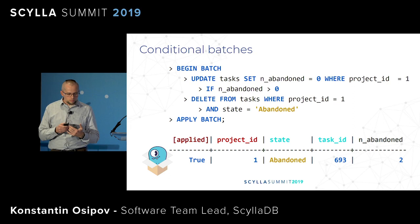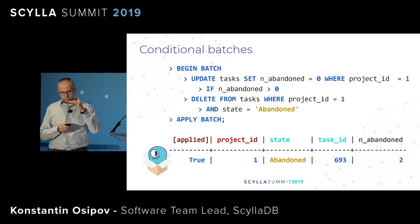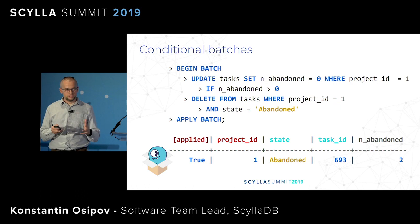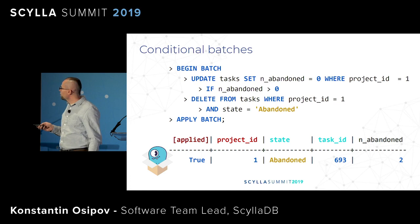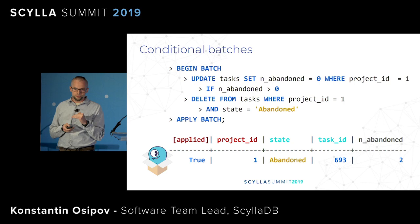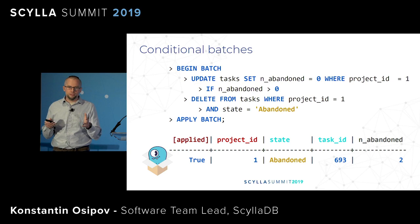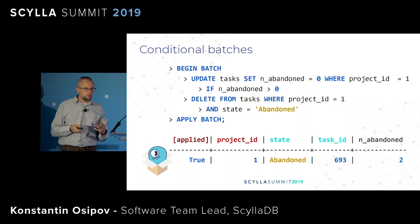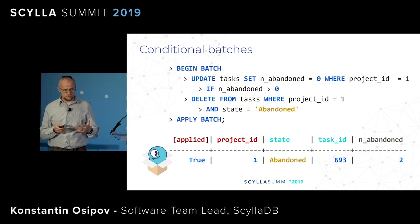Conditional batches are very similar to classical transactions in traditional databases. The only difference is that if you have multiple conditions in the batch there is no else branch — if any condition is not true, it's do nothing. In this example I have a static cell 'abandoned' and a partition with all tasks associated with the project. I atomically update the static cell and delete all of the abandoned tasks in the project — a case where you'd want to use a conditional batch to do multiple changes atomically.